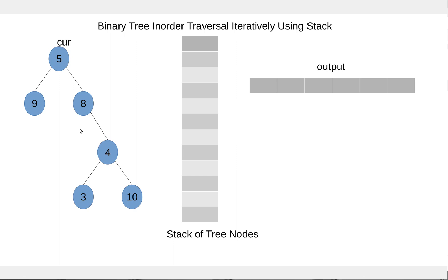The idea here is whenever we visit a node, we'll add the node to the stack if it is not null, and then move to the left child of the visited node. If the node is null, then we pop a node from the stack, process the node, and then move to the right child. We continue this until the stack is not empty or the node we visit is not equal to null.